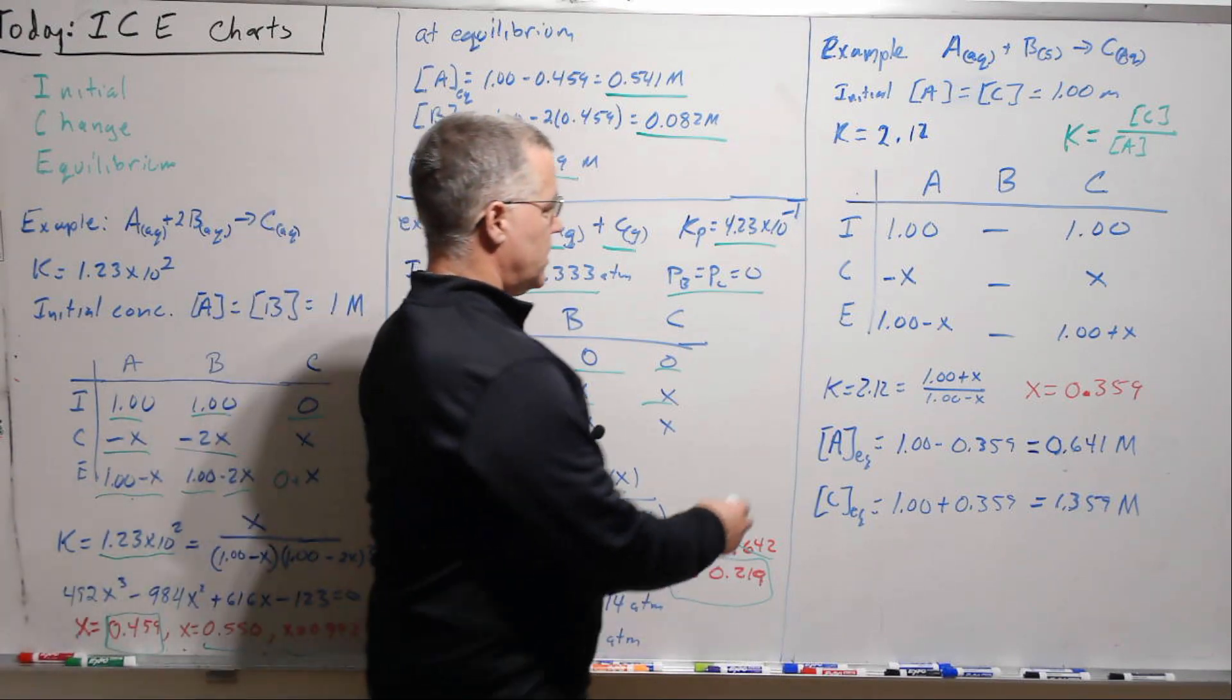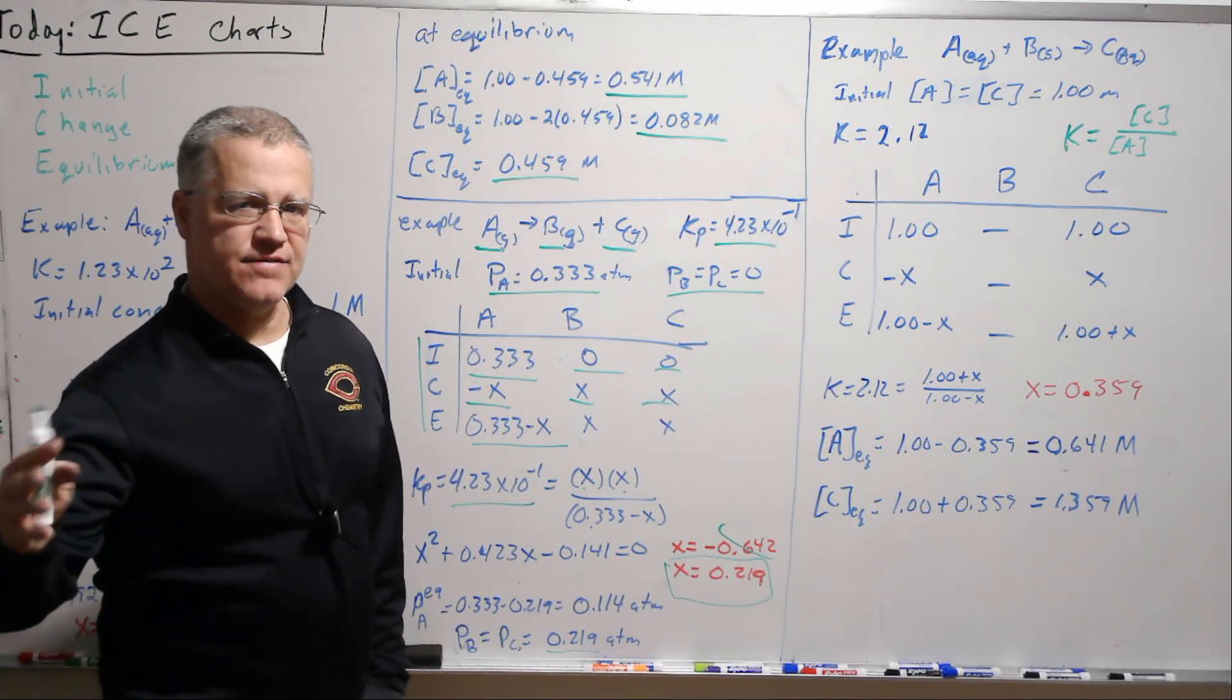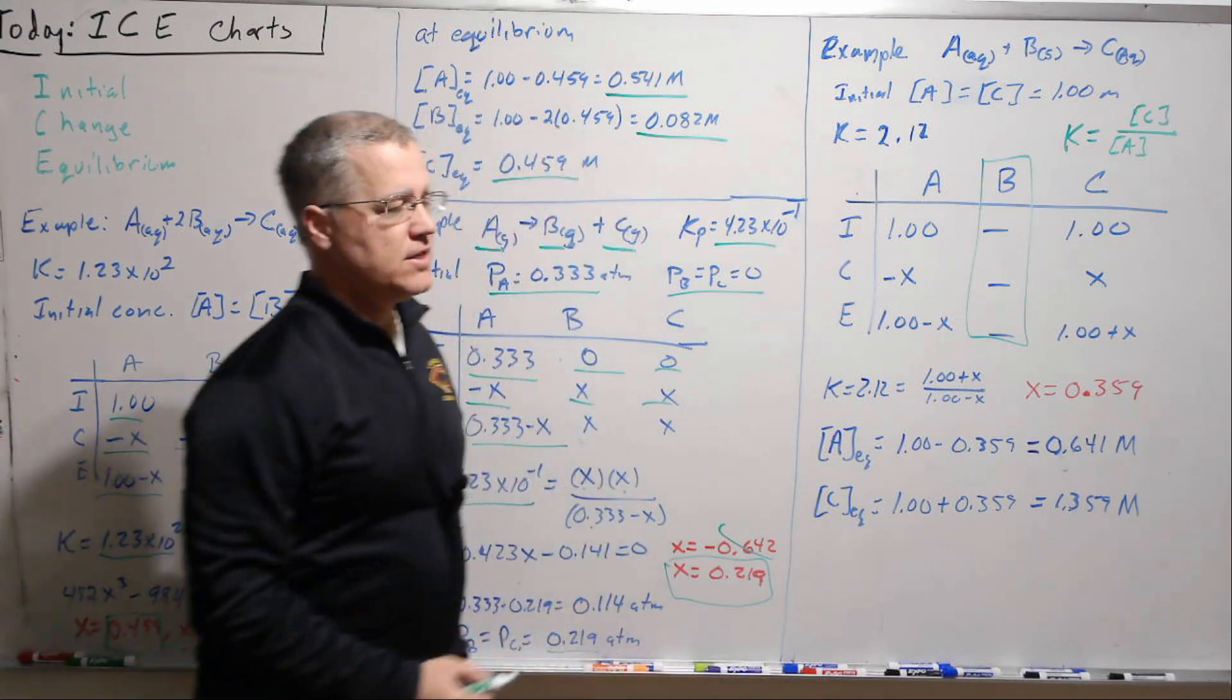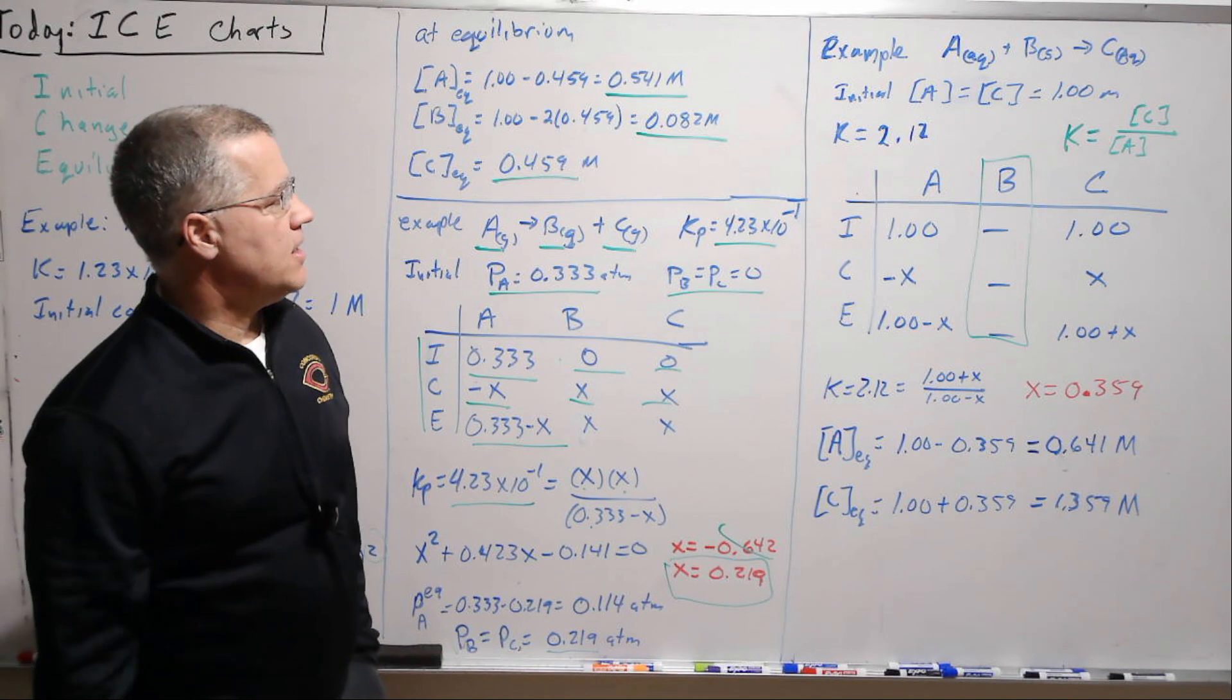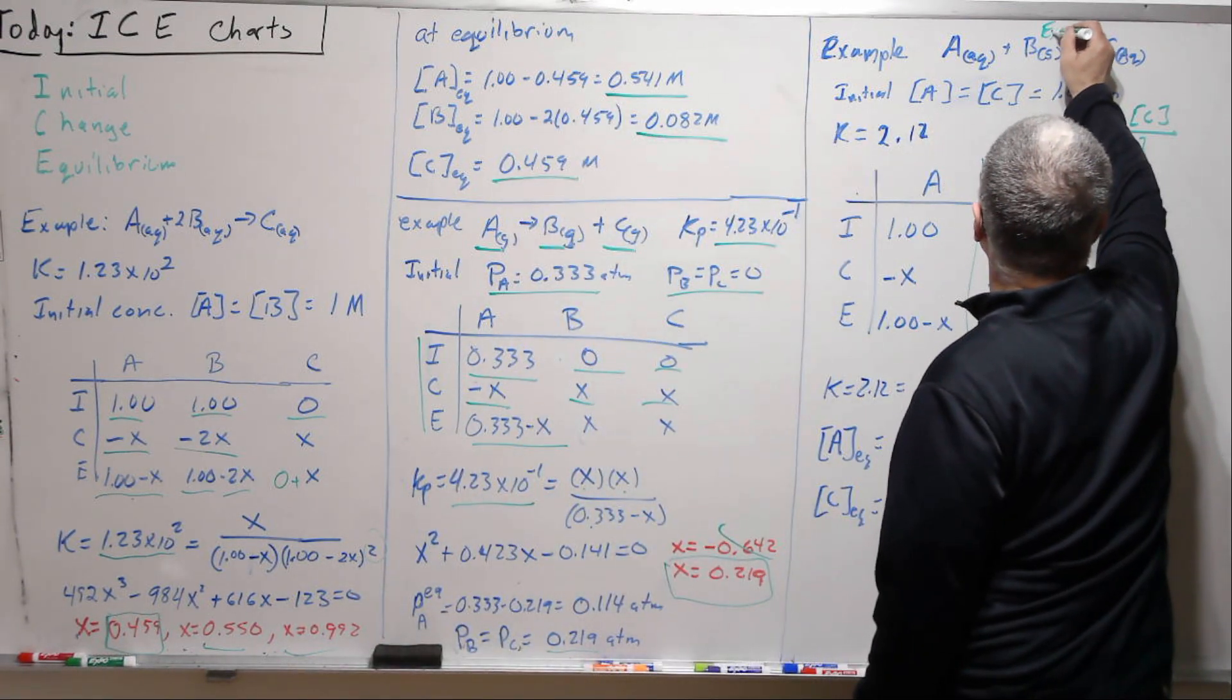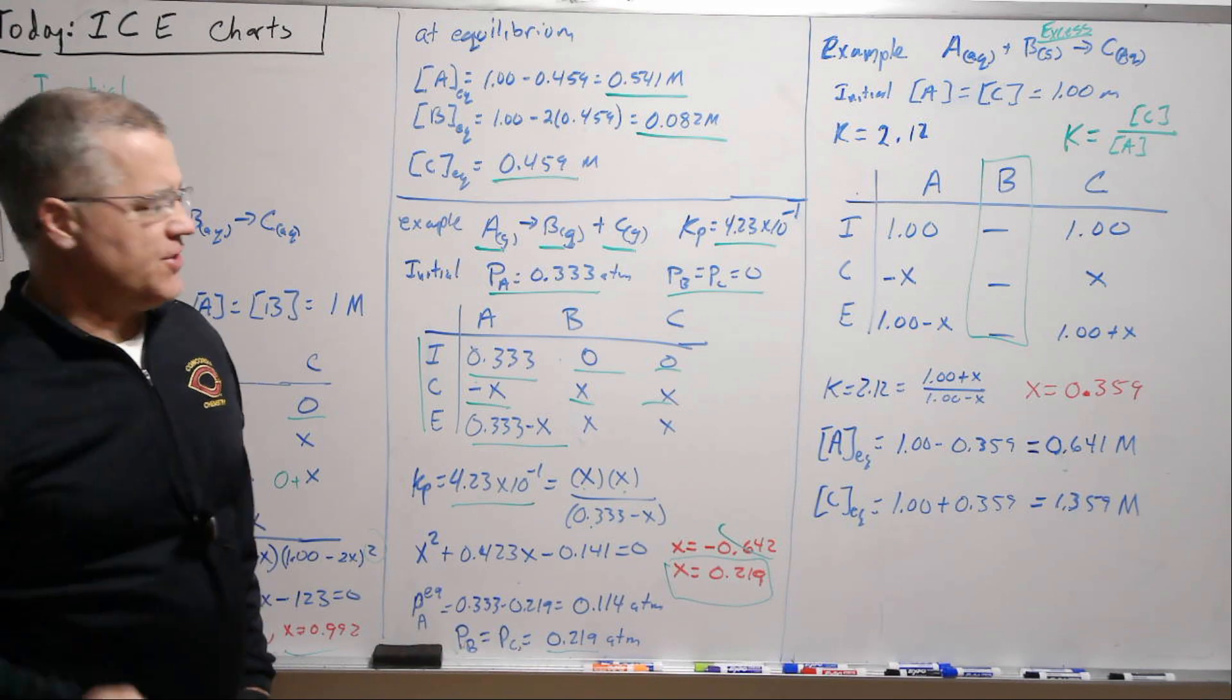So we can write our ICE chart. We don't need to include B here because that does not show up in the K. But just to kind of emphasize that point, I put B in here, and this, none of this column matters, right? So that's not going to matter. The amount of B will change, certainly. And we do have to be, so we do have to be a little careful that this is the excess reagent.